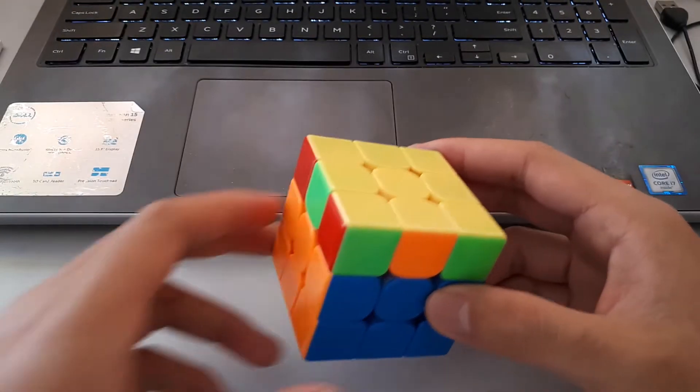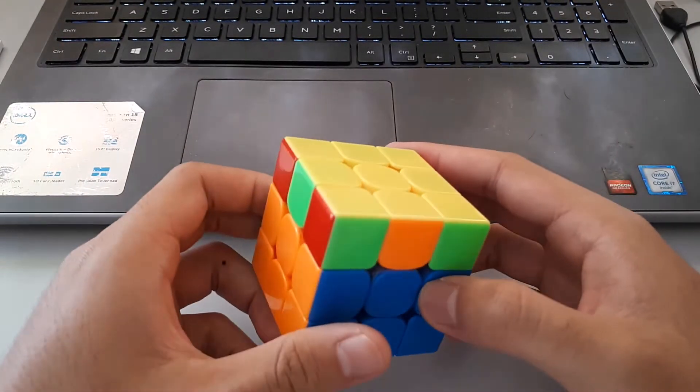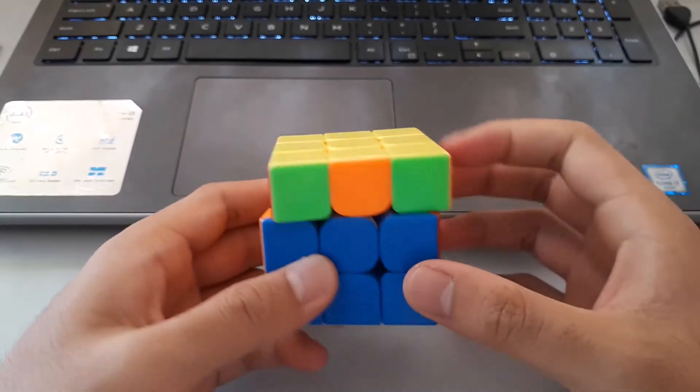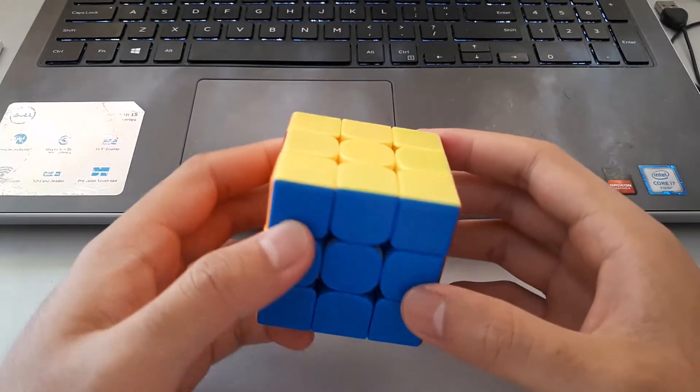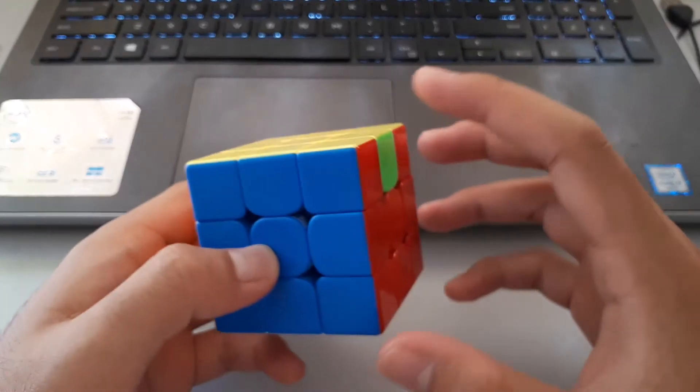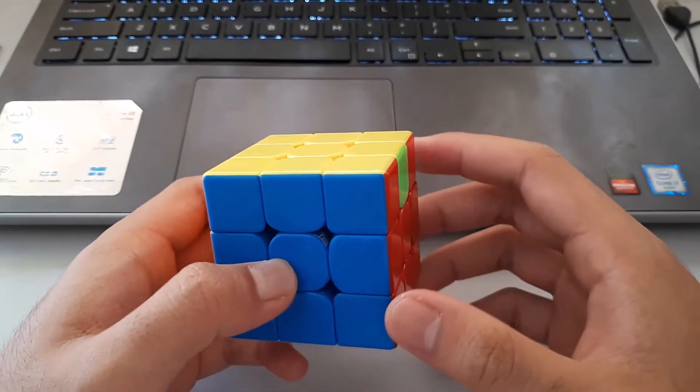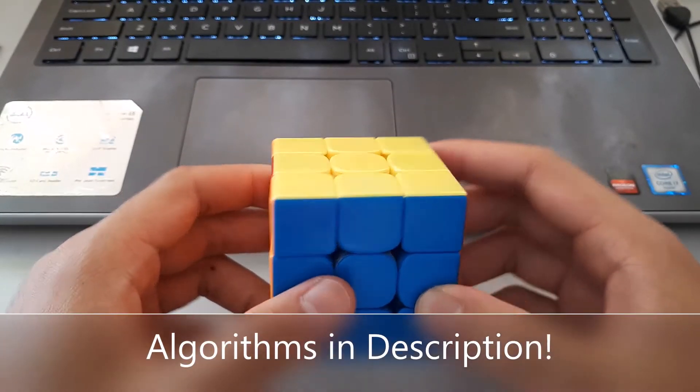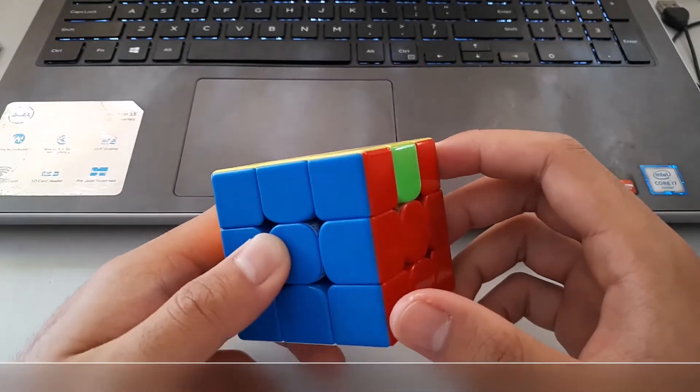So the good thing about R-U U-perms is they can be done from the back as well. So when you do get a case like this, you don't have to AUF, do the algorithm, and then AUF back. So it's more flexible with these algorithms. And plus, because it's R-U, you could cancel out moves with some OLLs. I'll put the algorithms that are done from the back in the description below. I won't show them on camera though.